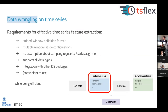tsflex also does not make assumptions about sampling regularity or whether multiple series are aligned. For example, when working with data from wearables and smartphones, data points are not perfectly aligned, but using tsflex you can define a time-based window and stride and it will use data within that time period to calculate features — you don't need to worry about aligning each data point to the others exactly. tsflex also supports all data types: time-based values, categorical, boolean, and numeric.